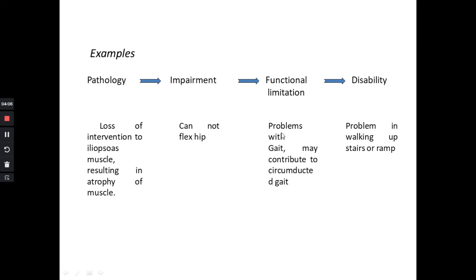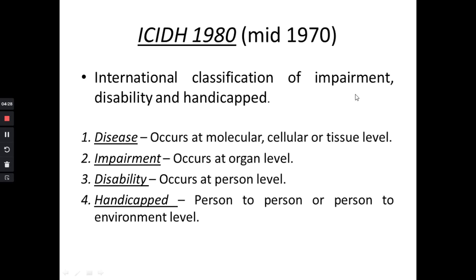In a second example: pathology is loss of muscle or muscle atrophy; impairment is inability to flex the hip; functional limitation is problems with gait; and disability is difficulty in walking, stair climbing, or ramping due to muscle tightness or atrophy. That covers disability according to the NEGI model. The next model is ICIDH, given in 1980, and the ICIDH and ICF models will be discussed in the next video. Thank you so much for watching.